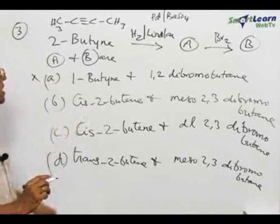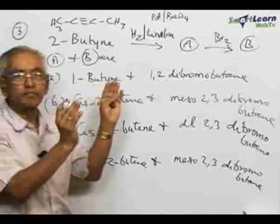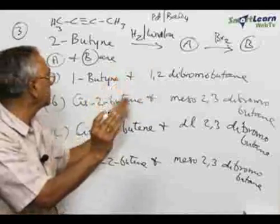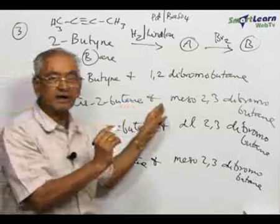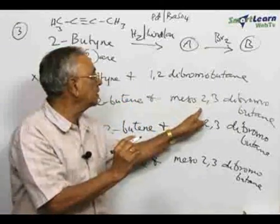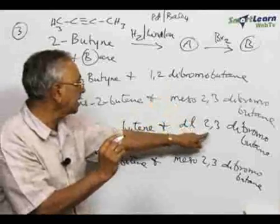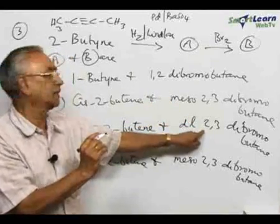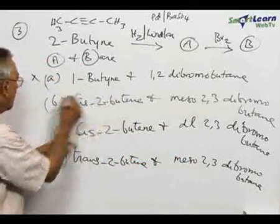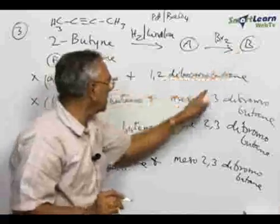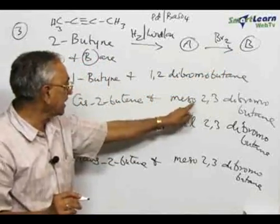In the case of cis-2-butyne, Lindler catalyst always leads to cis-2,3-dibromobutene. This part is right. But cis-butyne on bromination will not give rise to a meso compound. It will give rise to 2,3-DL, a racemic mixture of 2,3-dibromobutene. Therefore, A is correct but B is not correct. The capital B compound is not correct. This is not a meso compound, so this is not a correct answer.